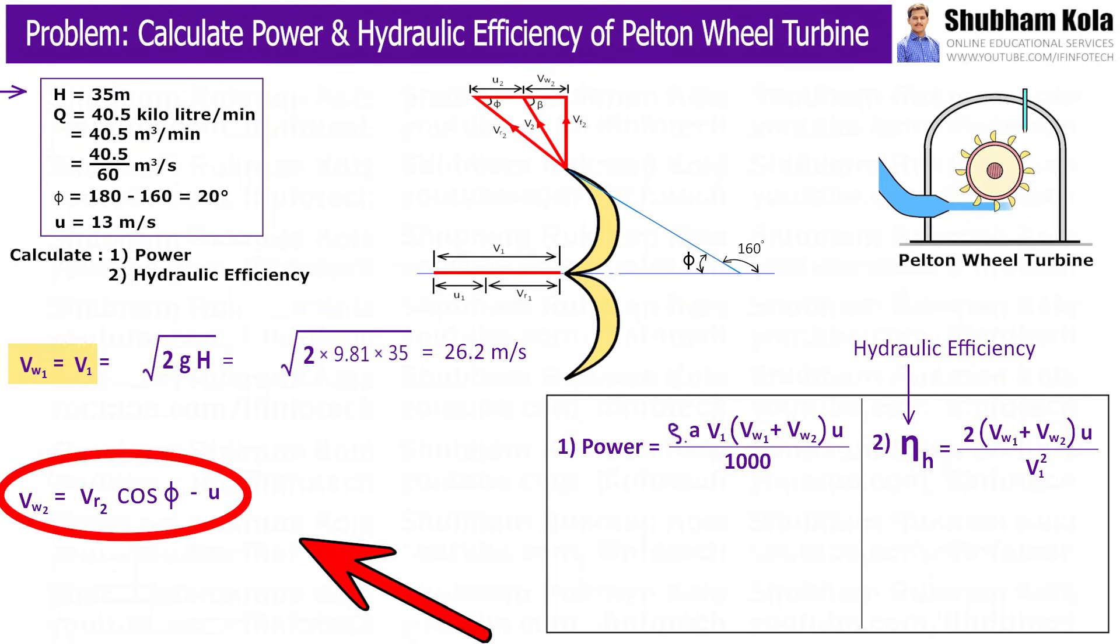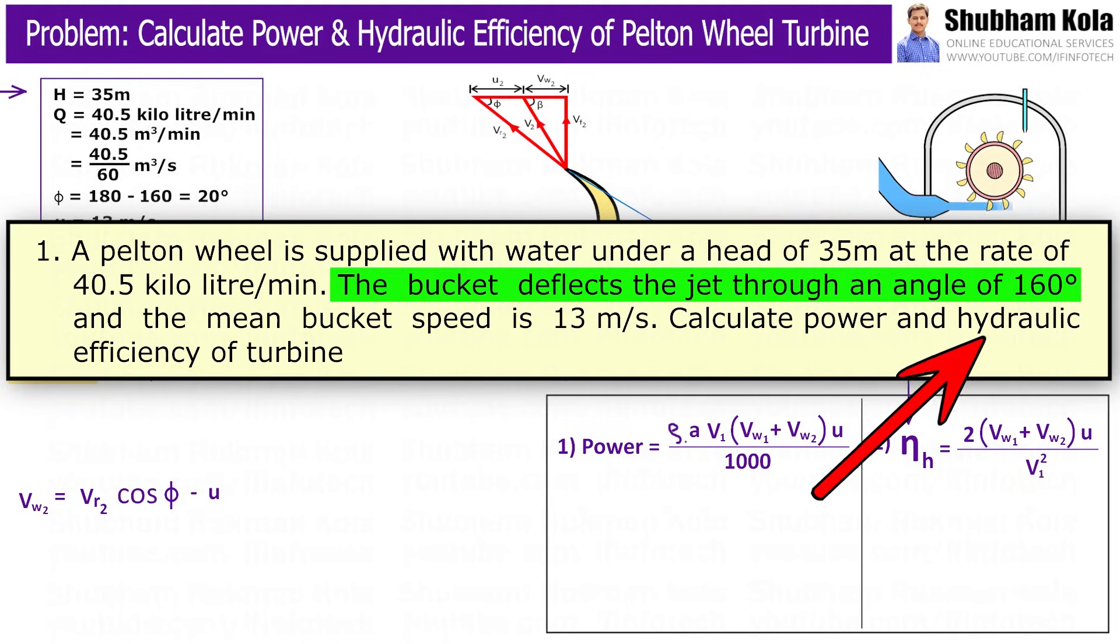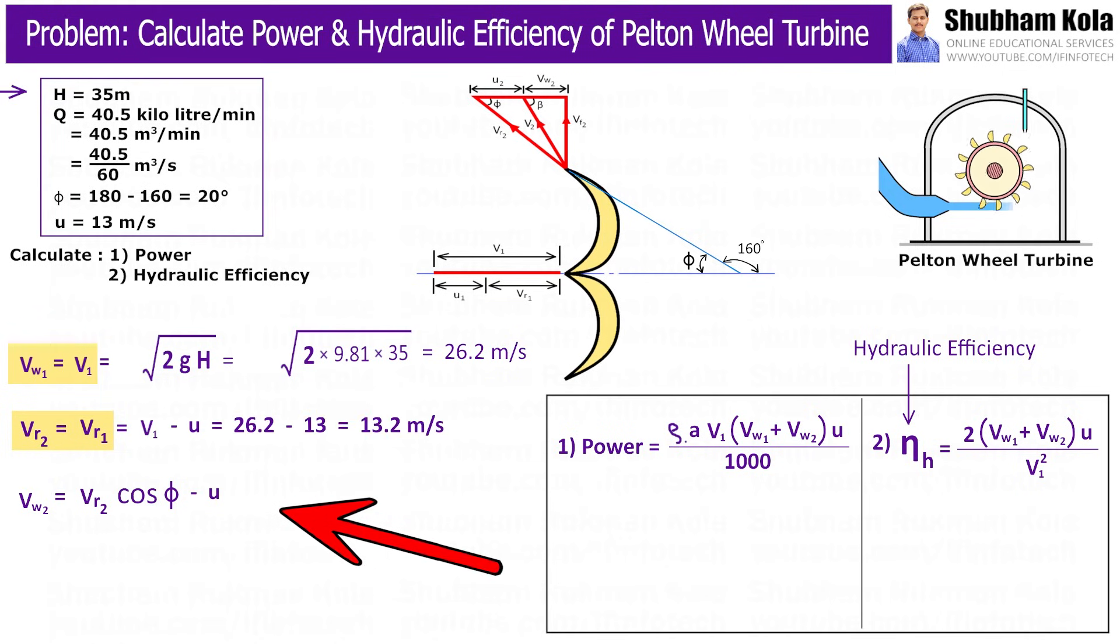To calculate VW2, we have the formula VW2 = VR2 cos φ minus u, where φ is the angle made by VW2 with the direction of motion of bucket at outlet. But in the problem, the given data is bucket deflects the jet through an angle of 160 degree. Therefore, φ is equal to 180-160 which is equal to 20 degree. And VR2 equal to VR1 which are the relative velocities of jet at inlet and outlet. And VR1 is V1 minus u. Therefore, by putting all these calculated values, I will calculate VW2 as -0.6 m/s.